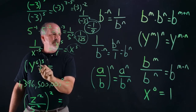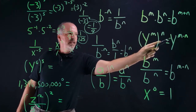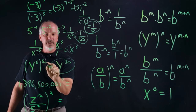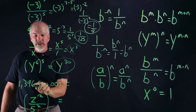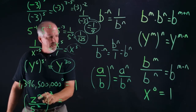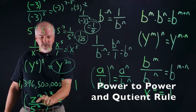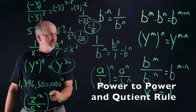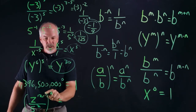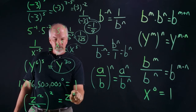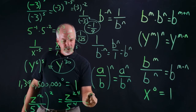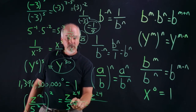Here we have a power to a power — when we have a power to a power we multiply, so we multiply six times five: y to the thirty. One billion three hundred ninety-six million five hundred thousand to the zero power — anything to the zero power is one. We have z to the 12th over five to the second to the second power — applying the rule a to the b to the n becomes a to the n over b to the n, so this is z to the 24th over five to the fourth, which equals z to the 24th over 625.